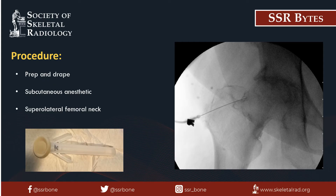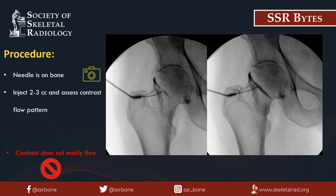Once the area is anesthetized, the spinal needle can be inserted at the same site. It is important to make sure that the area you're inserting the spinal needle is the same area that you numbed with the anesthetic. The spinal needle is then guided to the bony landmark of the superlateral femoral neck. Use fluoroscopic guidance intermittently to check the position of the needle as you advance it. Adjustments may have to be made if the needle is not along the expected trajectory. Here's an example of an injection with an oblique approach — notice the severe osteoarthritis on this fluoroscopic image.